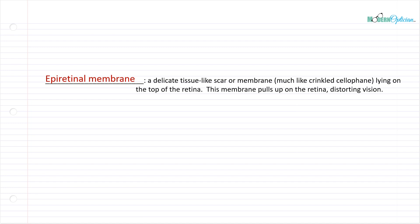How about an epiretinal membrane? It's actually quite common but not something we discuss on a regular basis. An epiretinal membrane is a delicate tissue-like scar or membrane — very much like cling wrap or cellophane lying on top of the retina. This is primarily a degenerative thing that happens later in life. It can pull up on the retina and distort vision, and can cause detachment, bleeding, or fluid swelling behind the tissue. If it gets significant enough, a surgeon can actually go in and pull that little membrane off to expose the healthy retina underneath.